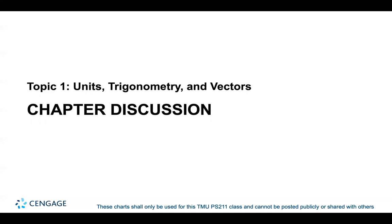Now let's get into the chapter discussion. Why should we study physics? The goal of physics is to provide an understanding of the physical world by developing theories based on experiments. Physical theories describe how systems work and make predictions verified through observation. Theories are not absolute — they can change with new information. Mathematics is the language of science.